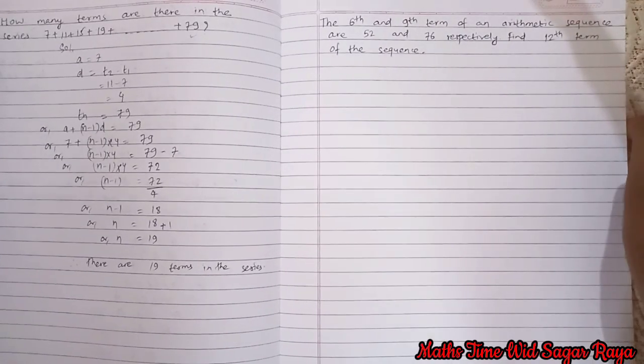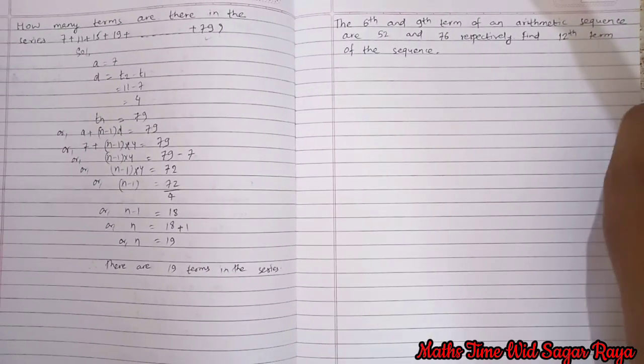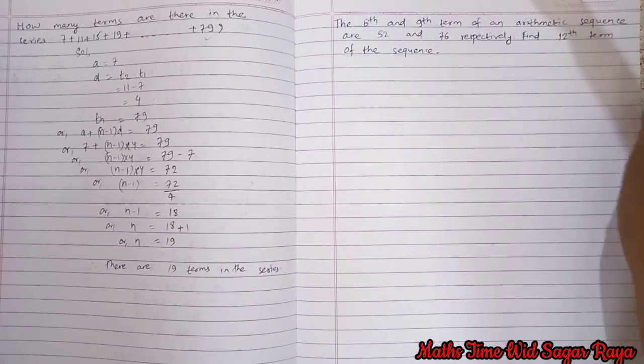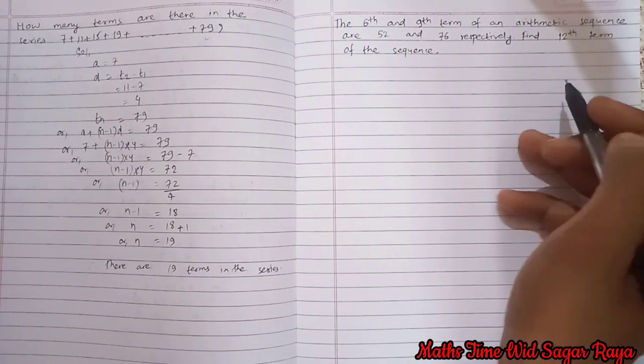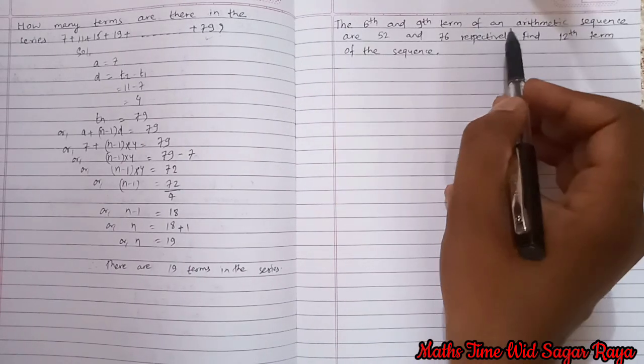Hello everyone, welcome to my channel Maths Time with Sagar Raya. Today I am back with another question, so without any delay let's go through the question. In the screen you can see the sixth and ninth term of an arithmetic sequence are 52 and 76 respectively.